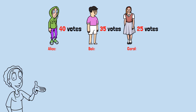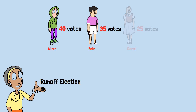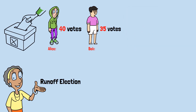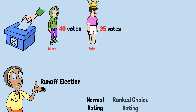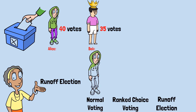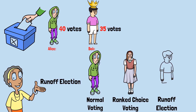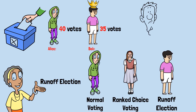Let's try a third system: a runoff election. We eliminate the candidate with the fewest votes — Carol — and then people vote again between Alice and Bob. Bob wins the runoff. So now we have three different voting systems, three different winners: Alice wins plurality, Carol wins ranked choice, Bob wins the runoff.